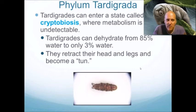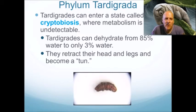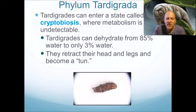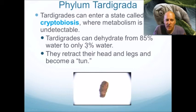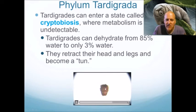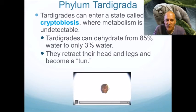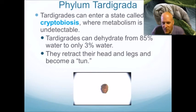Here's where tardigrades really get strange — and one reason the internet loves them. They can enter a state called cryptobiosis, where metabolism is undetectable. 'Crypto' means hidden, 'bios' means life, so you can't tell they're alive. They dehydrate from 85% water down to only 3%, retract their head and legs, and coil into a ball called a 'tun.' In this state they can't walk around — they're completely inactive — but they can withstand incredible environmental conditions.